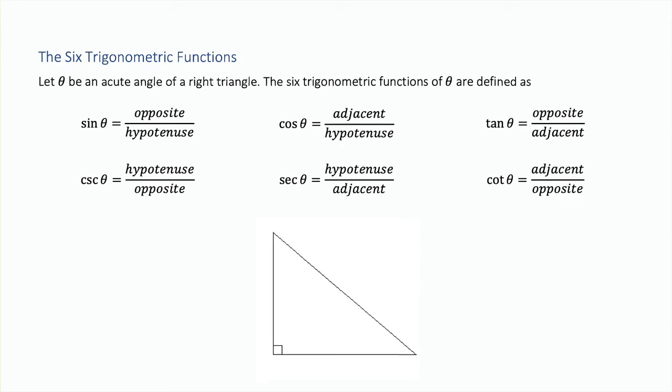If we have a right triangle, then we know that similar triangles are triangles that have the same angles. The size of the triangle doesn't really matter if you divide two lengths of the sides. Dividing two sides of a triangle gives us something of a constant for a set triangle with set angles.